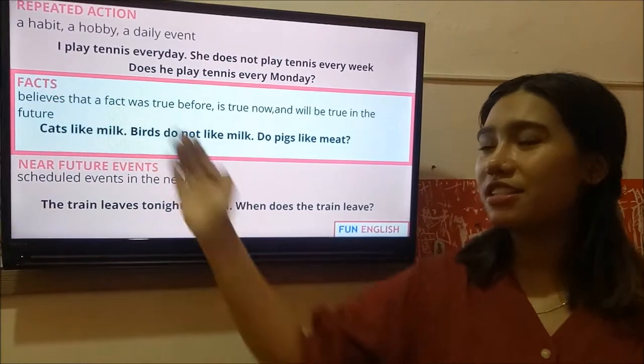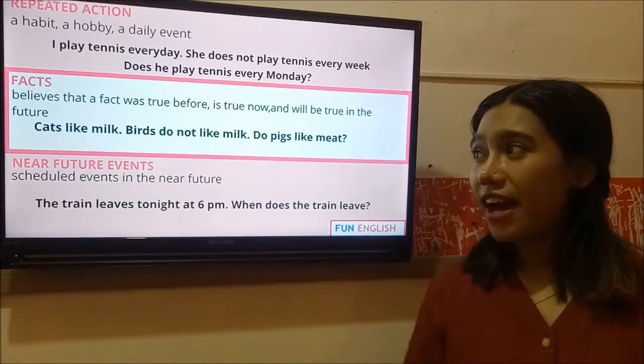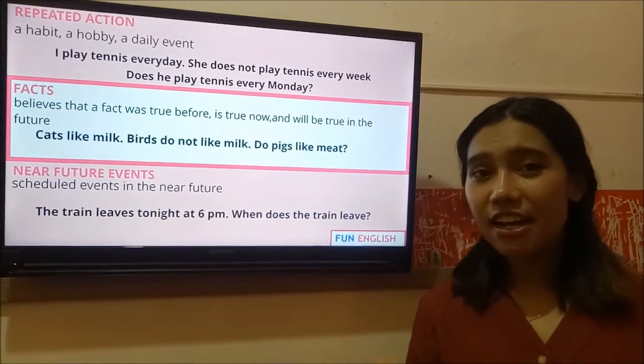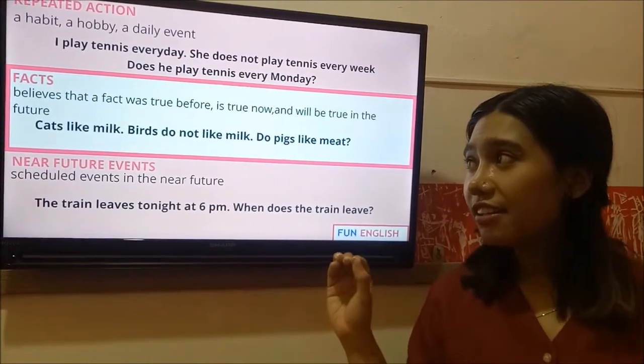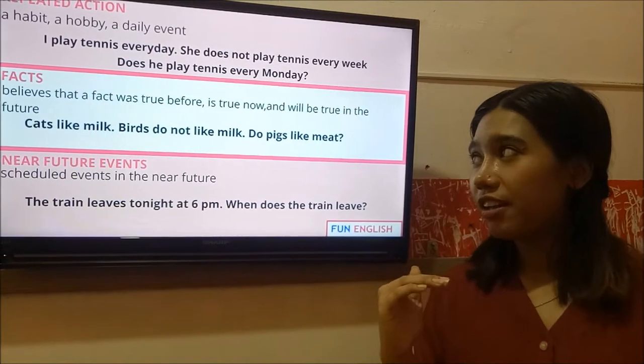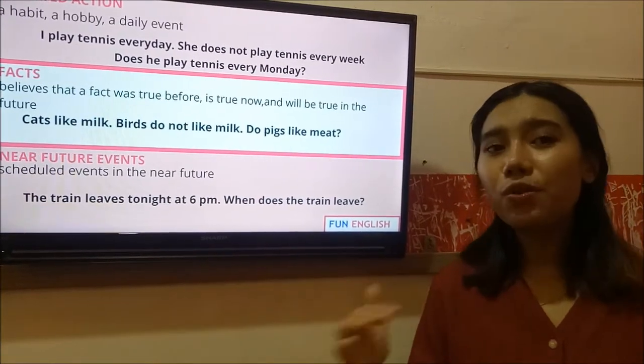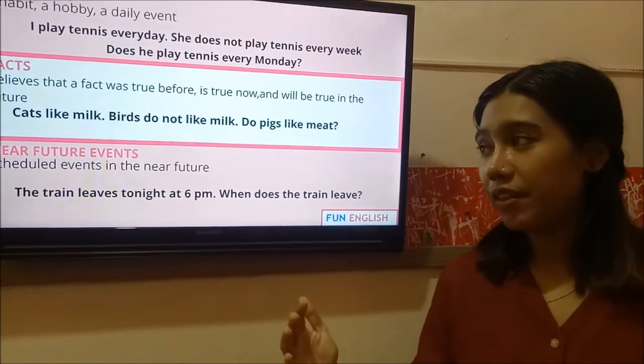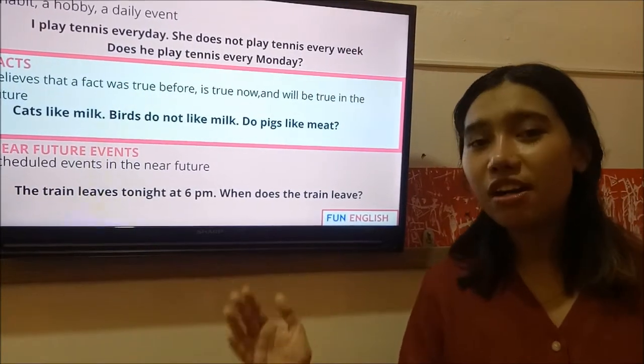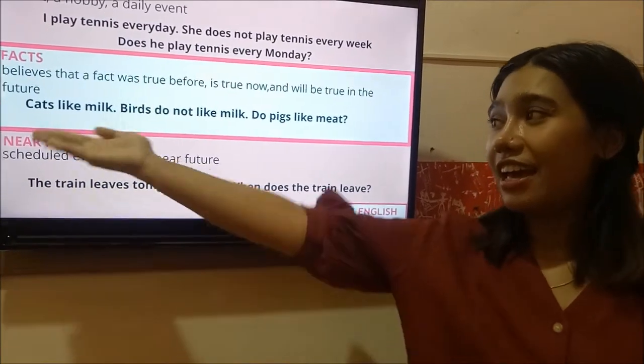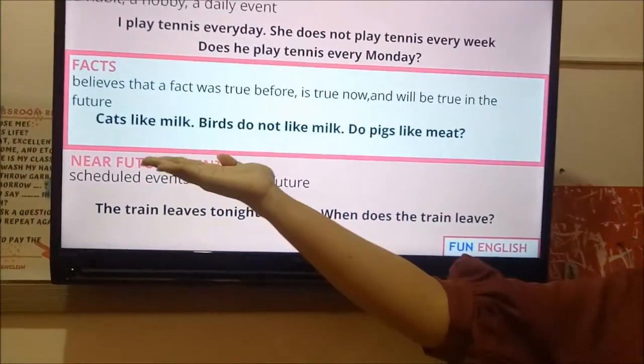And the second one is facts. Facts is when you believe that the event was true before and true now and also will be true in the future. For example, like, the earth is round. Okay?